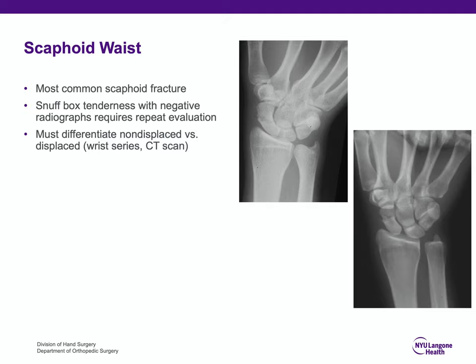The scaphoid waist fracture is the most common scaphoid fracture. Typically, patients have snuffbox tenderness. If x-rays are initially negative, repeat evaluation two to three weeks later for repeat x-rays is required. If you still had a high index of suspicion for a scaphoid fracture with negative x-rays, an MRI would be indicated.